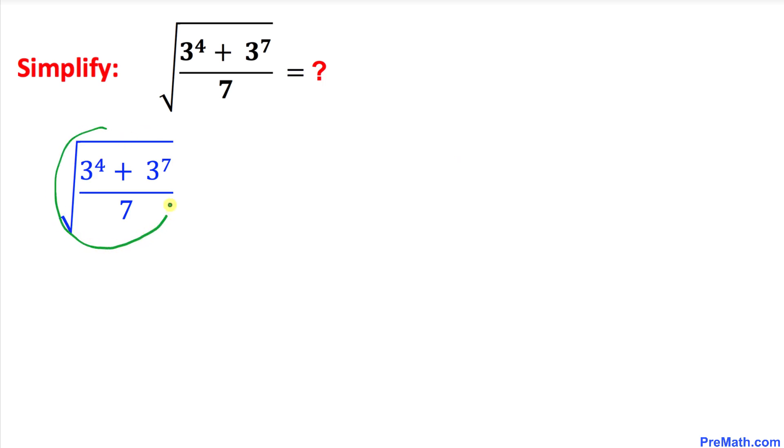Here I have just copied down this radical expression right over here. Let's focus on this part, 3 power 7. I have copied it down over here and this 3 power 7 could be written as 3 power 4 times 3 power 3 by using this product rule.